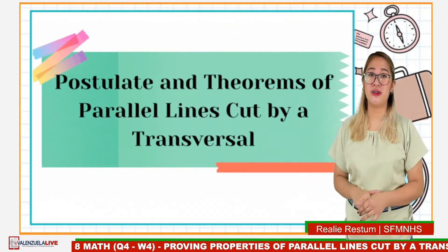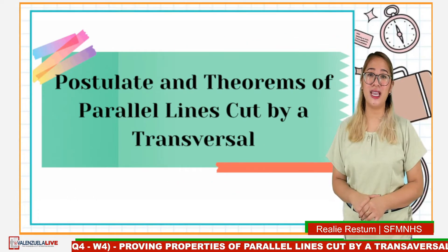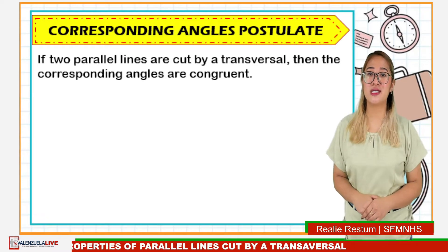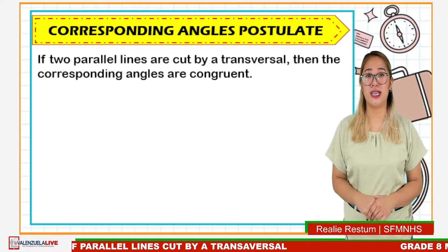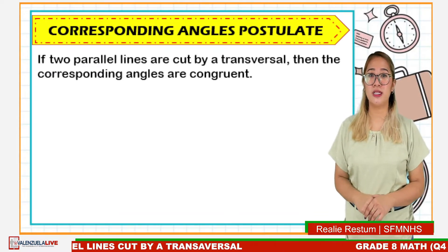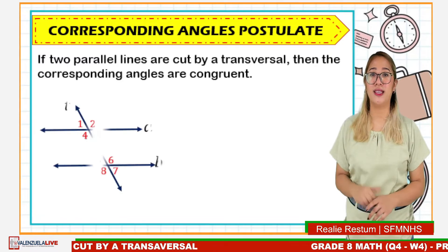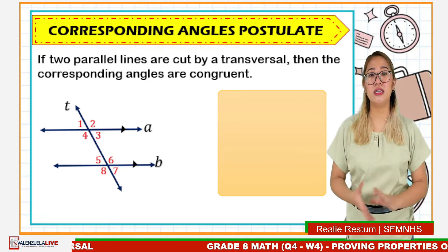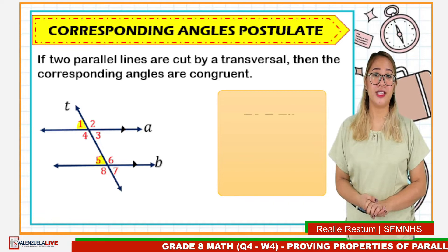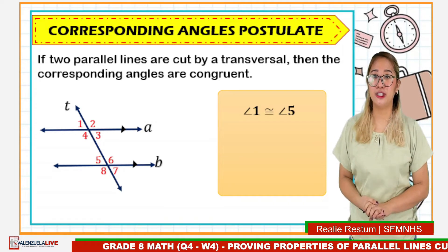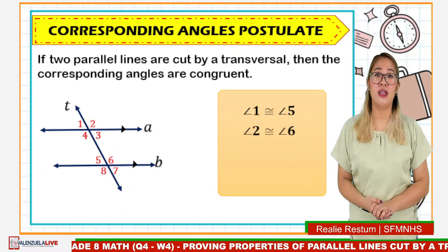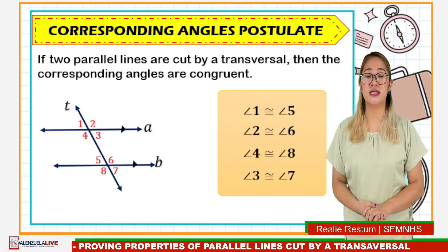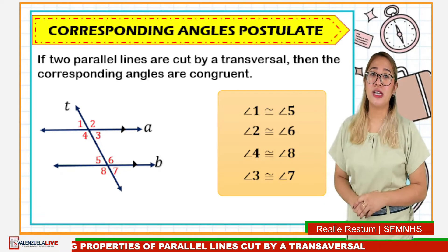Here are the postulate and theorems of parallel lines cut by a transversal. The first is the Corresponding Angles Postulate, which states that if two parallel lines are cut by a transversal, then the corresponding angles are congruent. For parallel lines A and B cut by transversal T: angle 1 is congruent to angle 5, angle 2 is congruent to angle 6, angle 4 is congruent to angle 8, and angle 3 is congruent to angle 7.